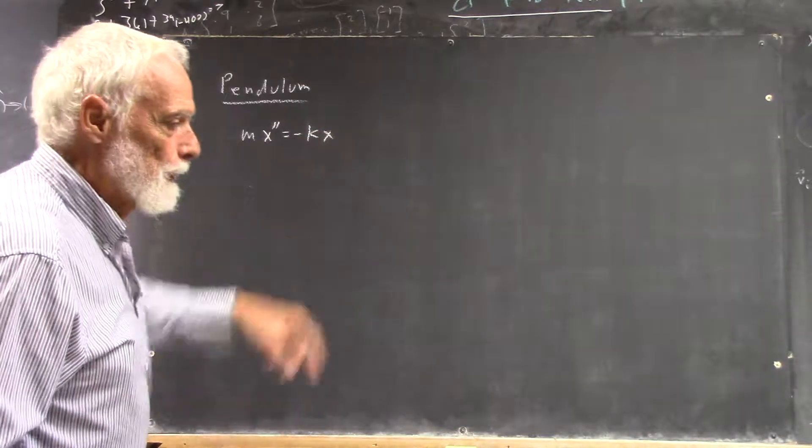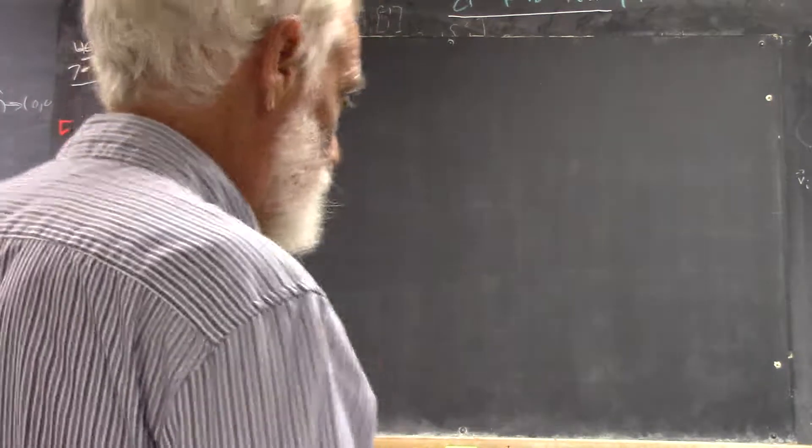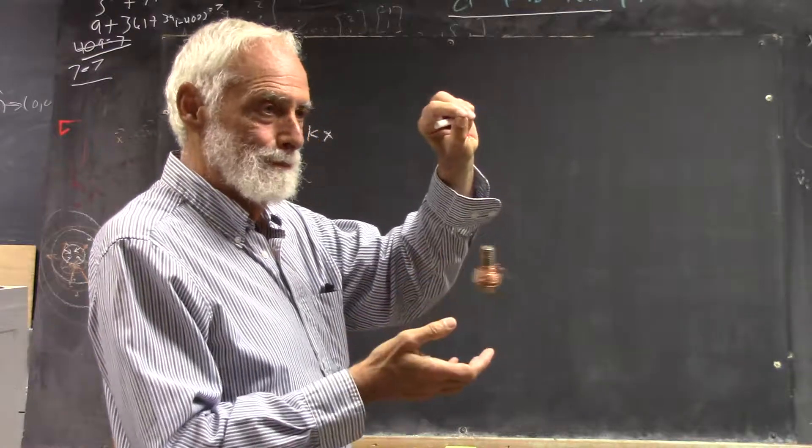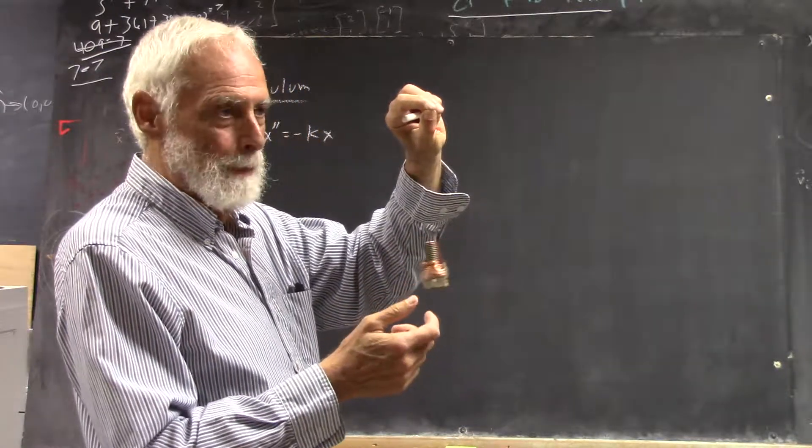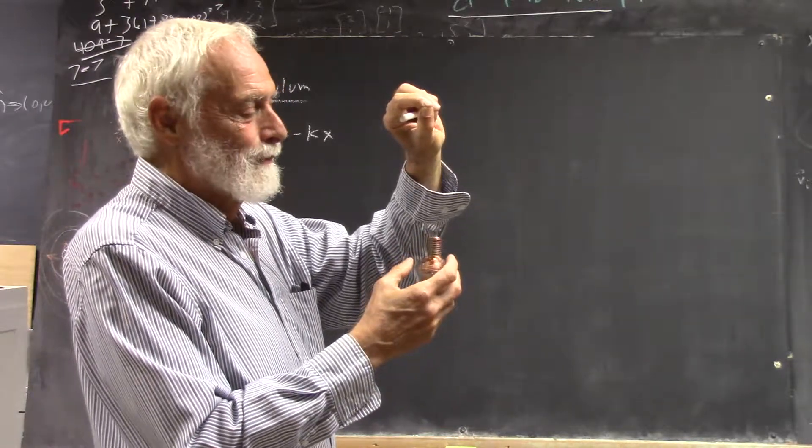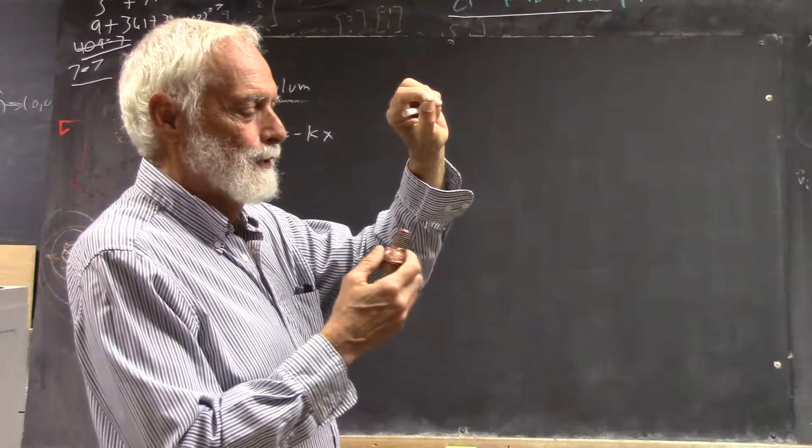Now, mx double prime equals negative kx. And without doing the physics, I'll give you some idea what that means. m would be the mass of this bolt. Now, this bolt isn't a point mass. It's not a particle. It's not particle-like. But it can behave sort of that way.